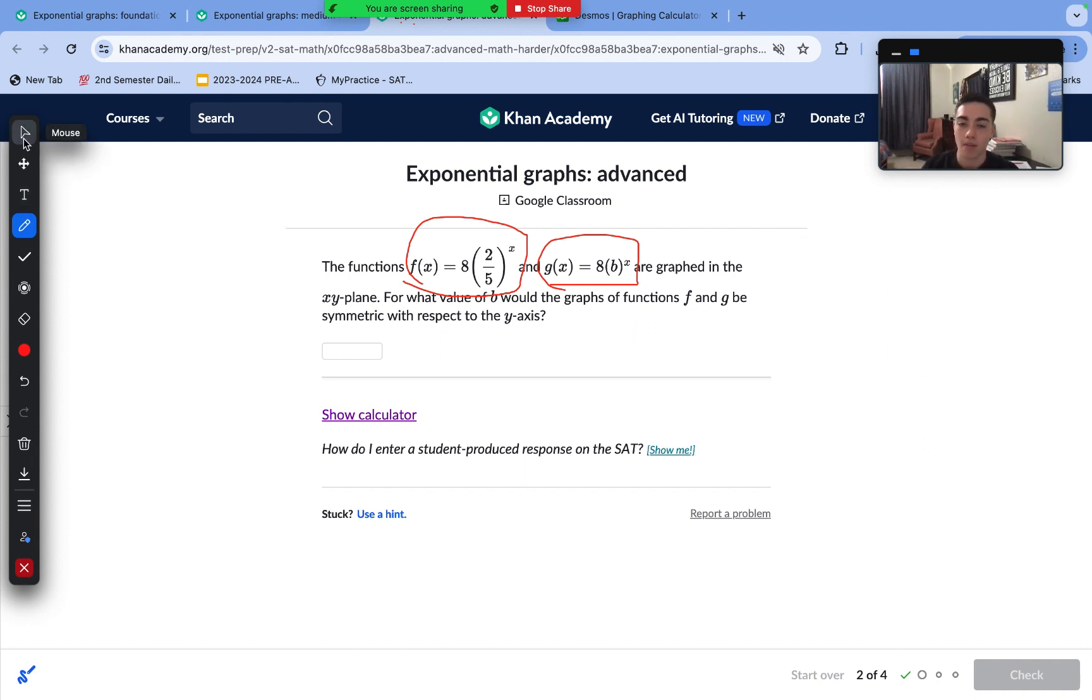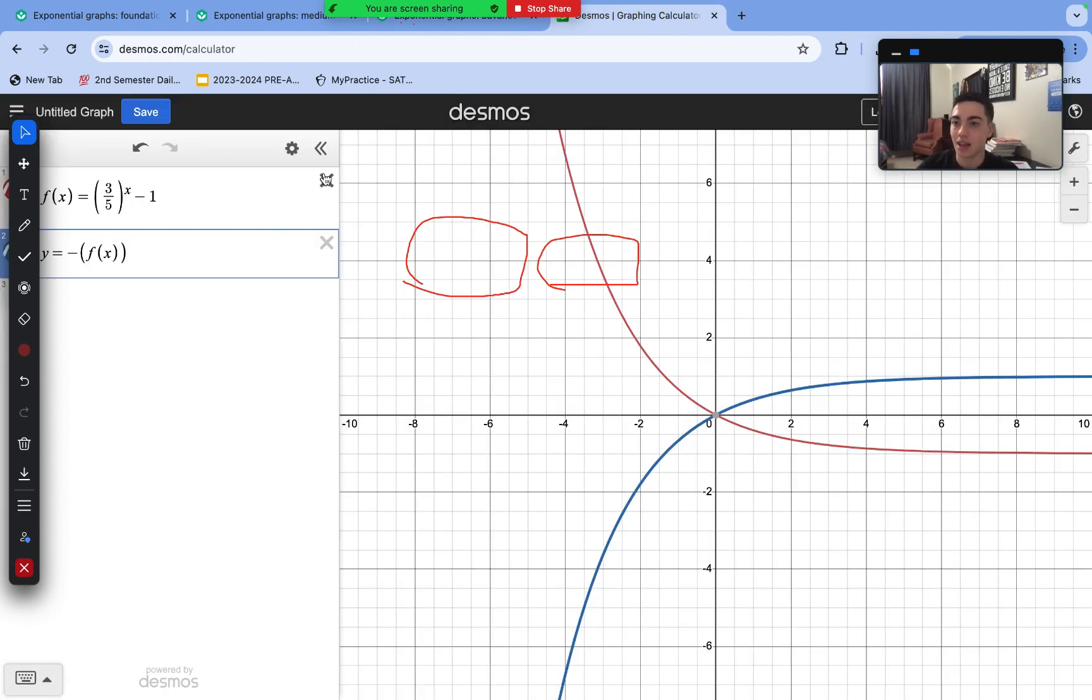The first step here is that we're just going to graph f(x), and then test out values of B that make them look symmetrical according to the y-axis. So let's go ahead and do that in Desmos.